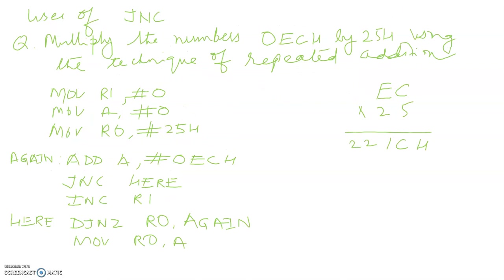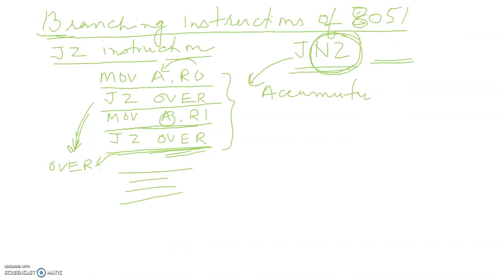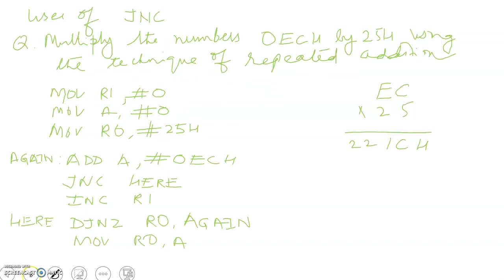Let us take one more instruction: JNC — Jump If Not Carry. It basically checks the carry flag. If the carry flag is 0 then it jumps to the label; otherwise it goes on executing the successive instruction. Let us take one example: multiply the numbers 0ECH by 25H using the technique of repeated addition.